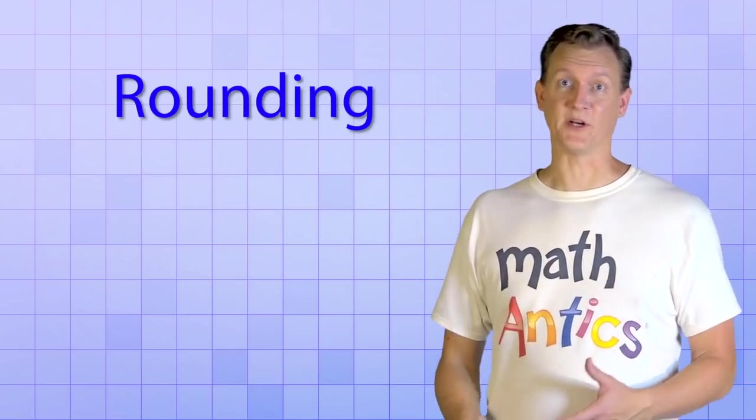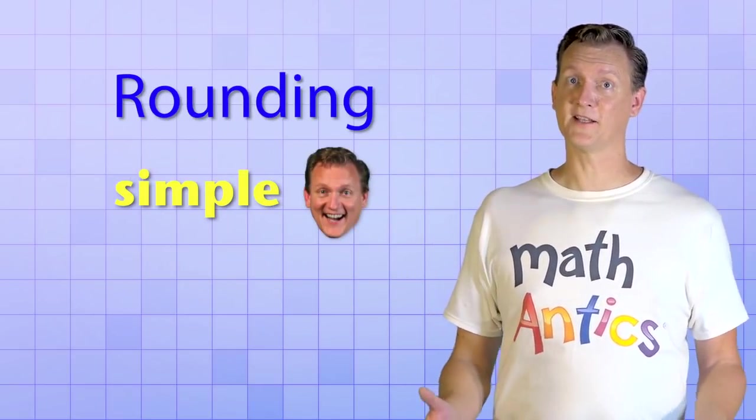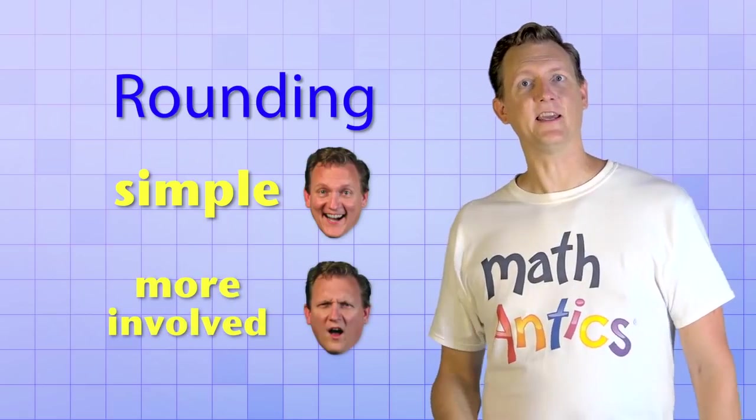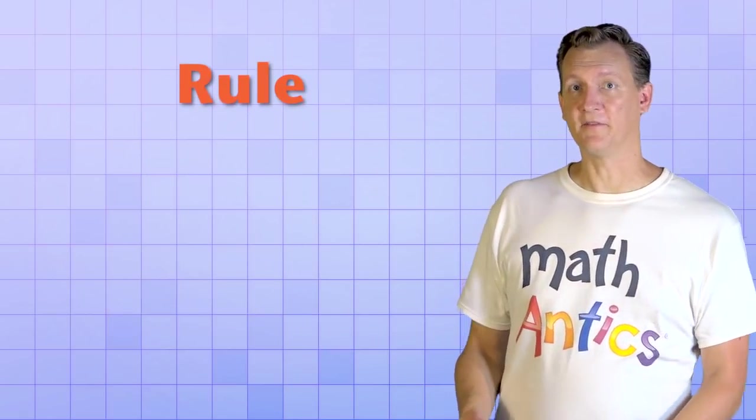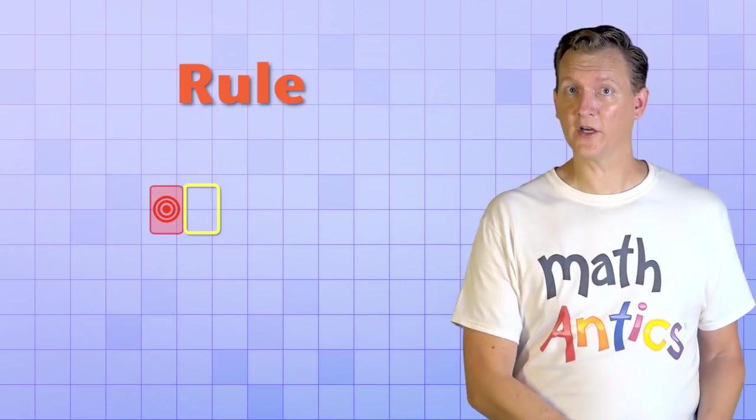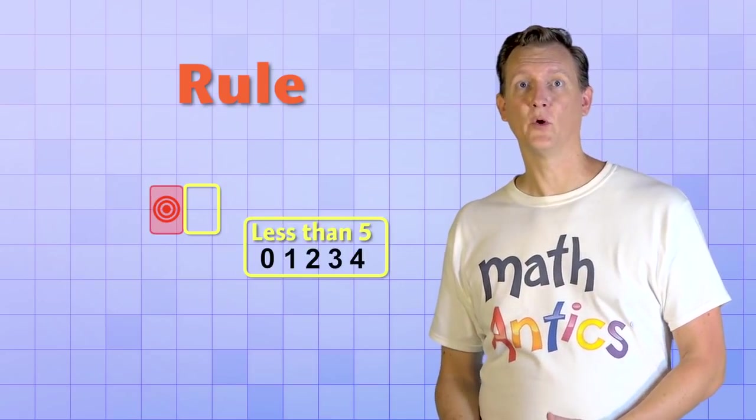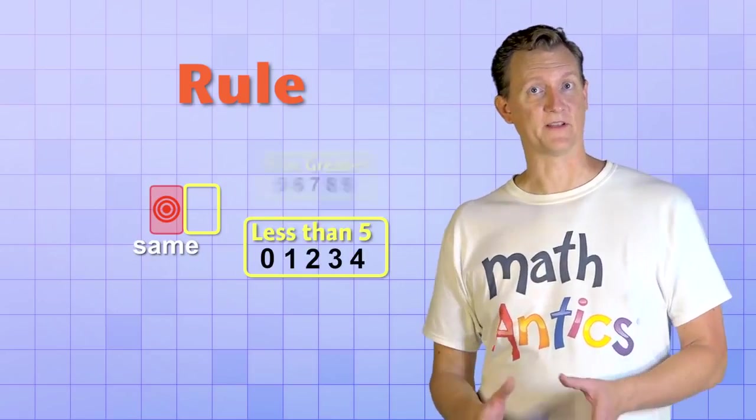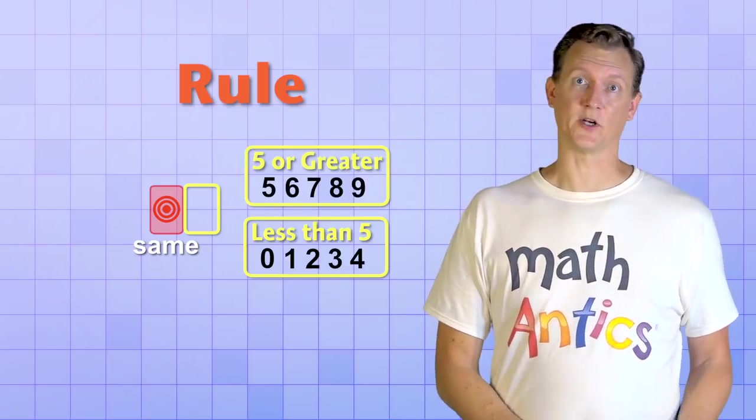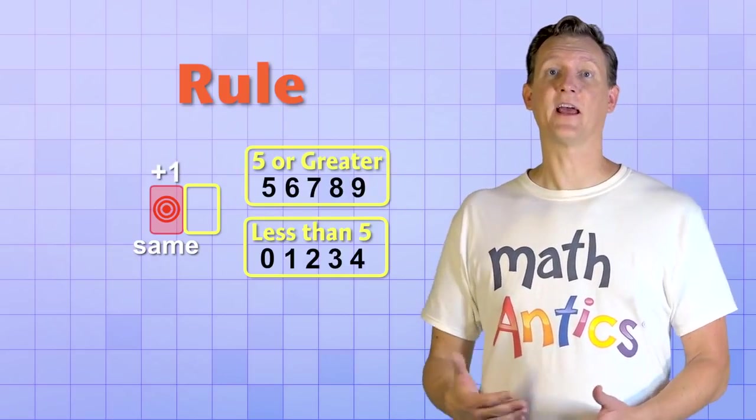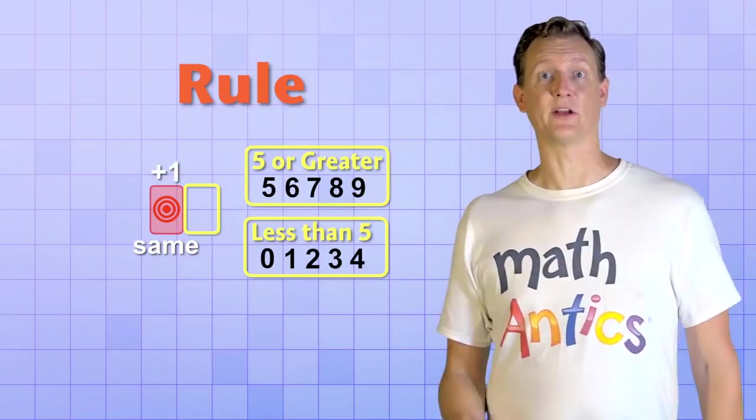So sometimes rounding a number is pretty simple, and other times it's a little more involved. The key is to remember the rule that if the digit to the right of the target is less than 5, we leave the target digit the same. But if it's 5 or more, we increase the target digit by 1, even if that causes a chain reaction with the bigger number places.